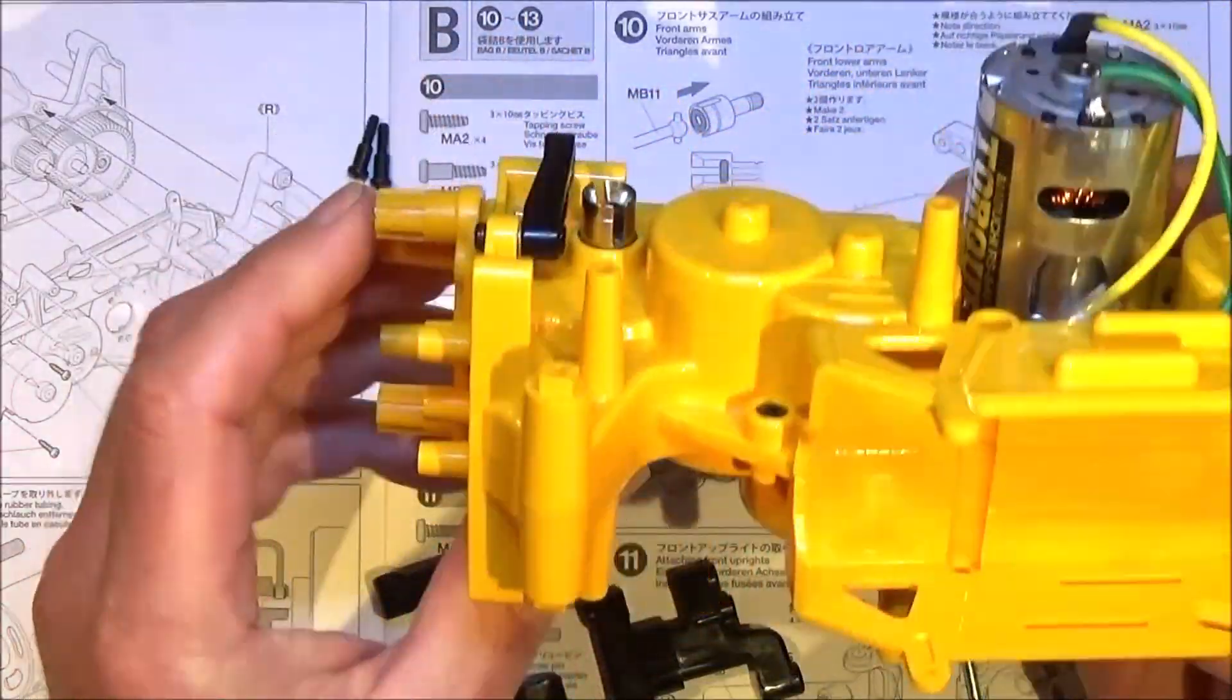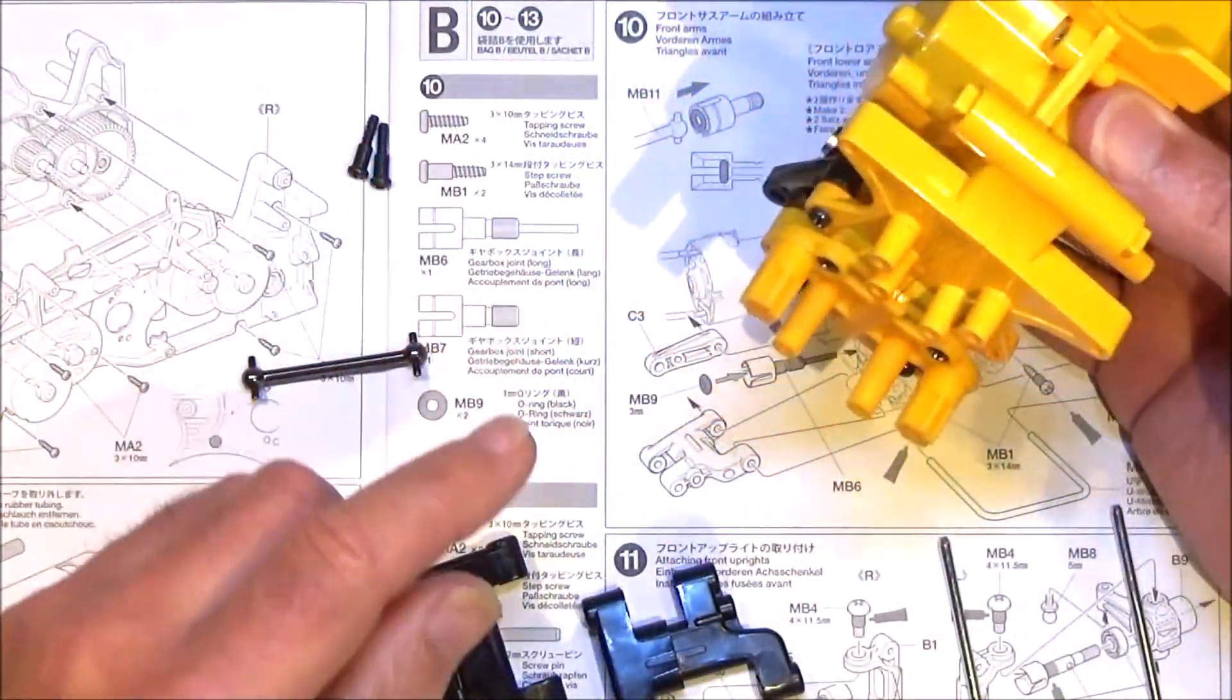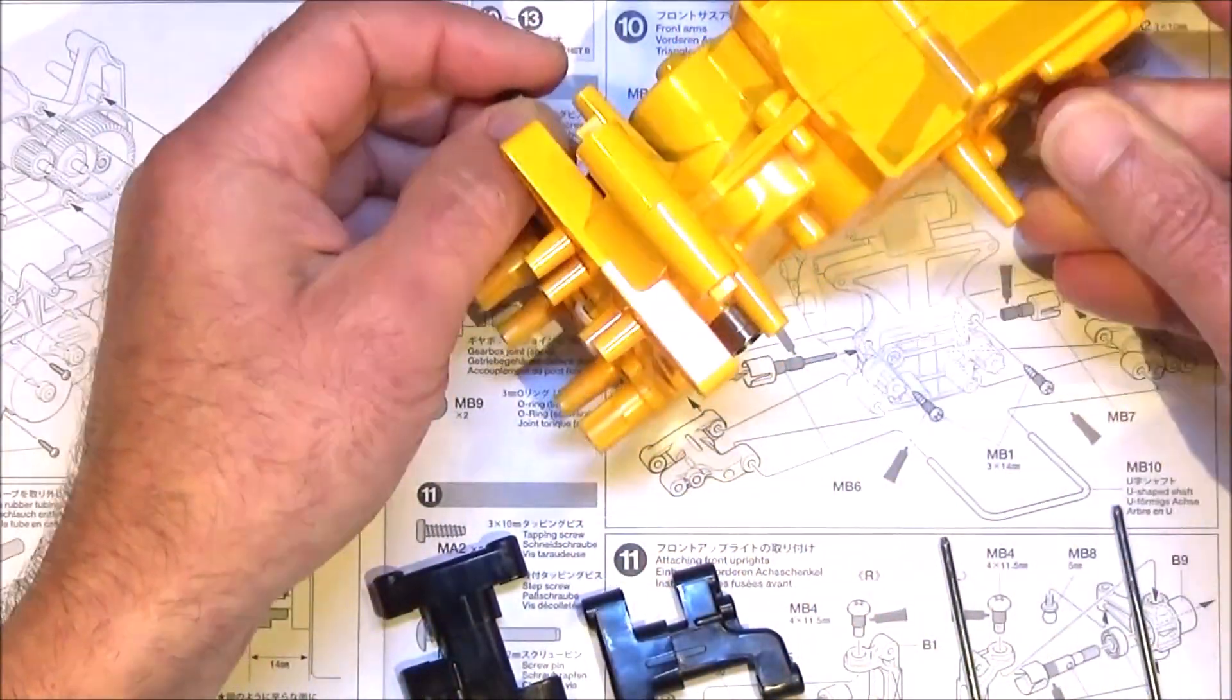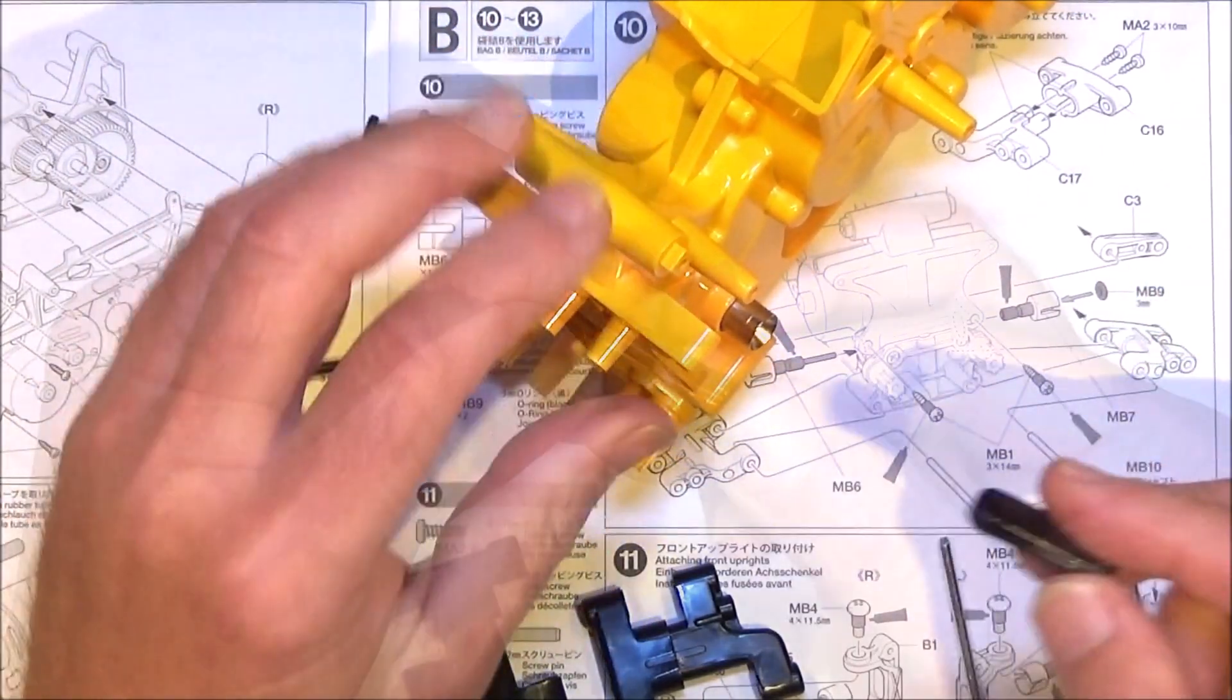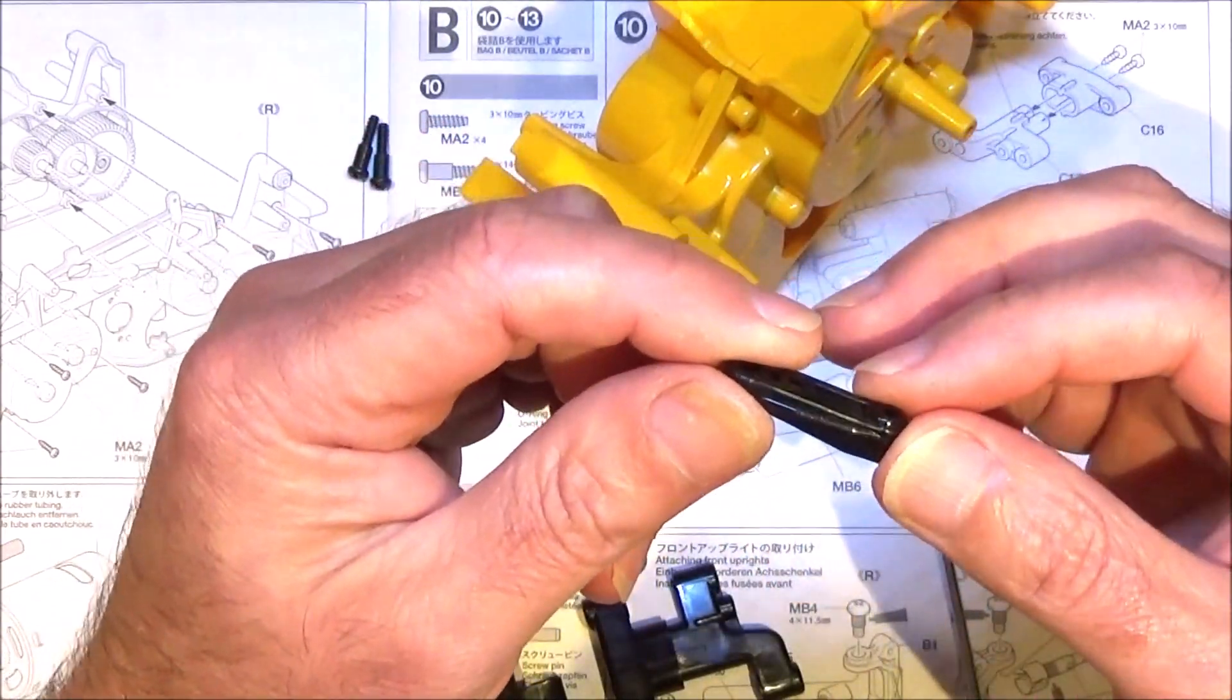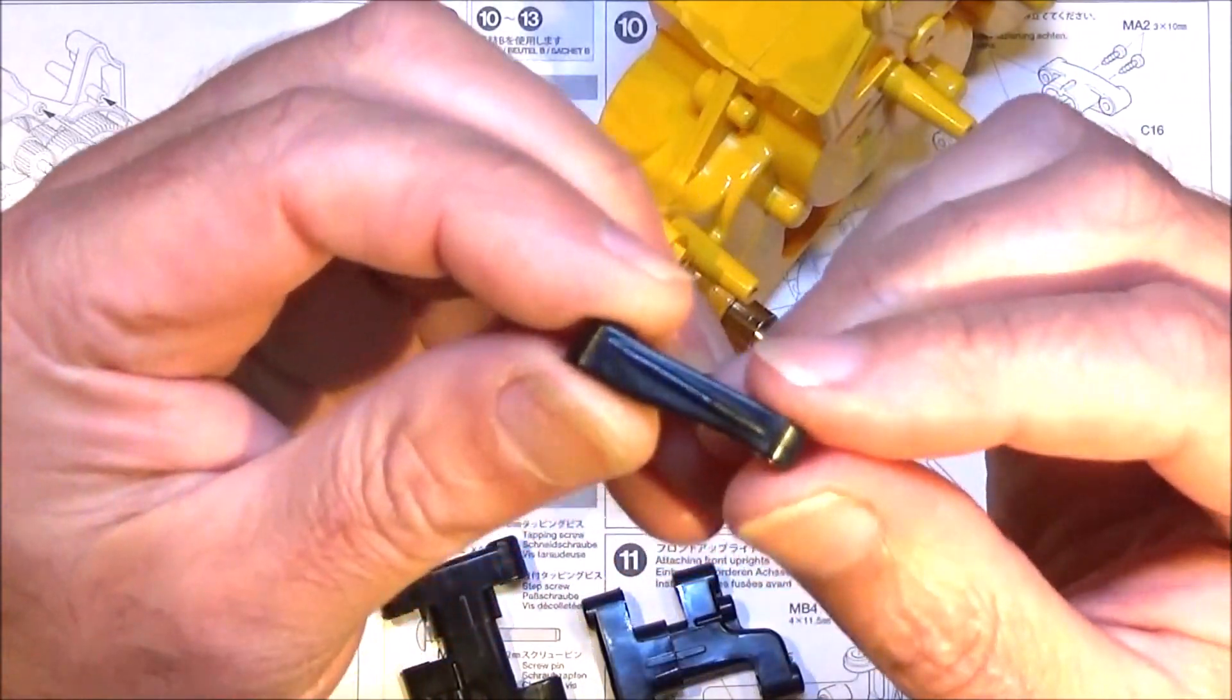Now let's get the top arms fitted which is C3. I've already fitted this one. Just make sure you get them the right way around. As you can see in the diagram, the flat part goes towards the rear, towards the back.